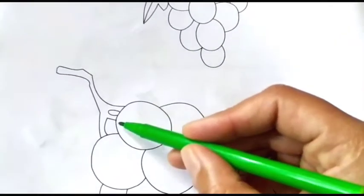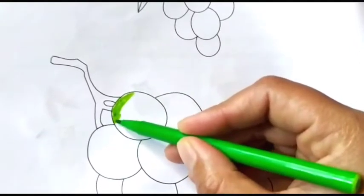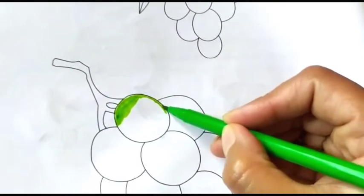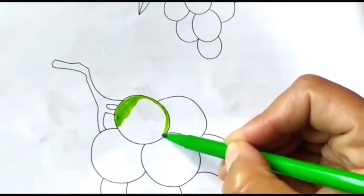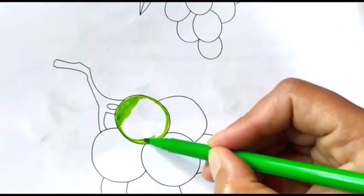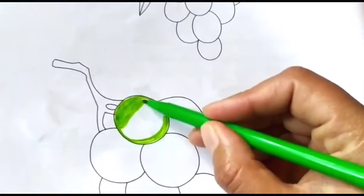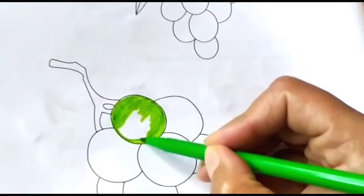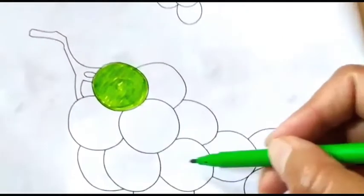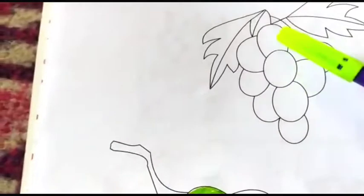We need to do green color for the more number of grapes. First of all, you need to color the edges. When you color, do the edges first, then color the upper part, and then fill in the center. This way you can do the whole fruit with color. The bunch with the lesser number of grapes we will do in purple color.